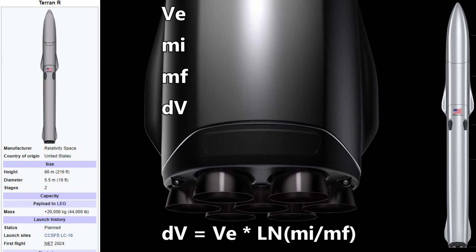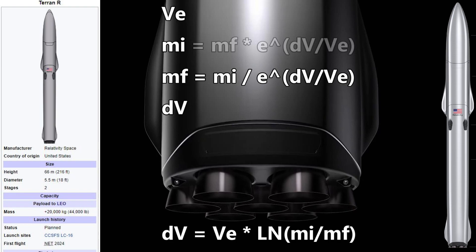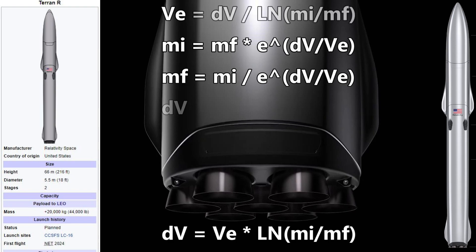Conversely, if we know the delta V, exhaust velocity, and initial mass, we can calculate the final mass. Or if we know the delta V, exhaust velocity, and final mass, we can calculate the initial mass. If we know the delta V, initial mass, and final mass, we can calculate the exhaust velocity.